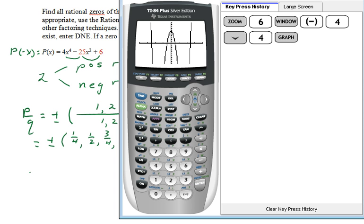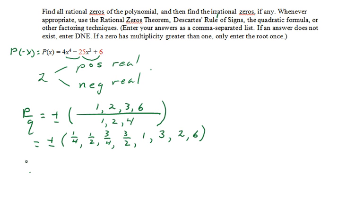It looks to me as if we may have zeros at plus and minus 1/2 just looking at the graph, and so let's test those with synthetic division first.